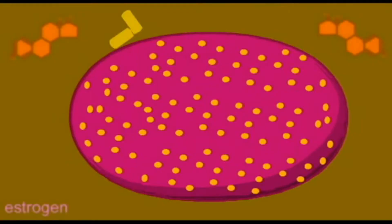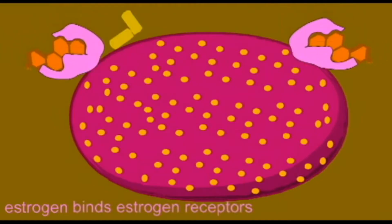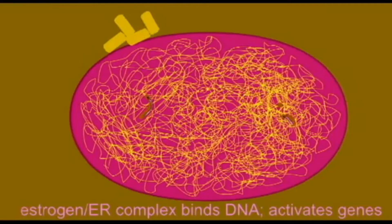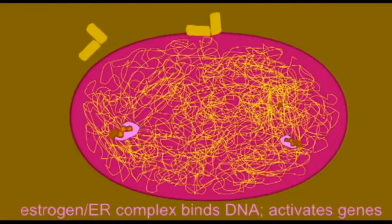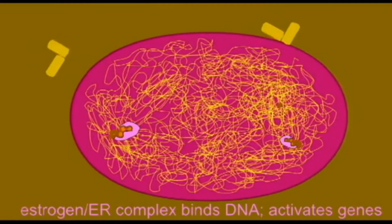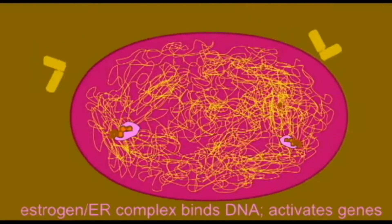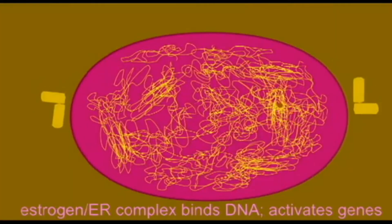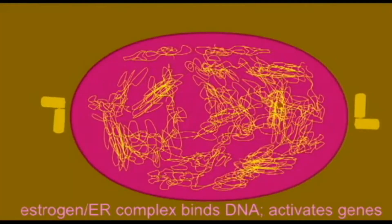While most hormones act only on the cell membrane, and the activated receptor then activates second messenger systems, estrogen actually enters the cell, and with its receptor, enters typically the nucleus, where it then binds to DNA, where it can turn on genes — taking genes which otherwise were not active and making them active — regulating the transcription of DNA.